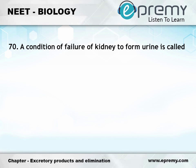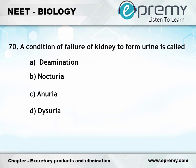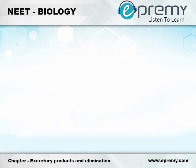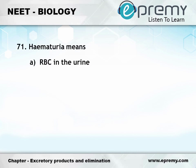Question number 70: A condition of failure of kidney to form urine is called — Option A: Deamination, Option B: Nocturia, Option C: Anuria, Option D: Dysuria. The answer is Option C: Anuria.